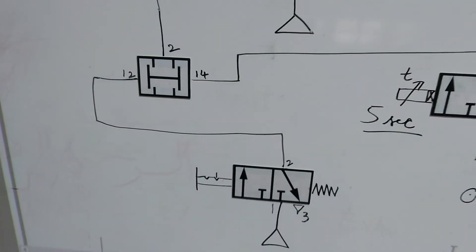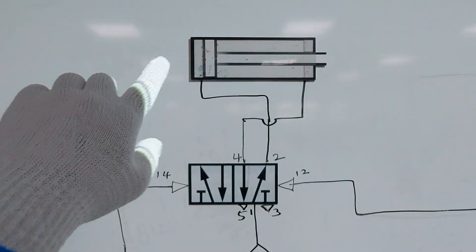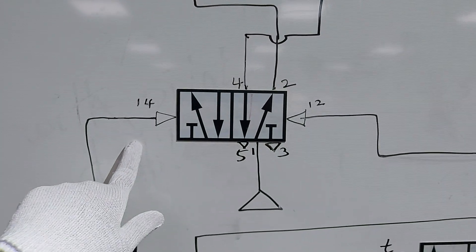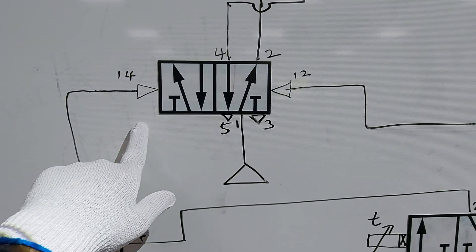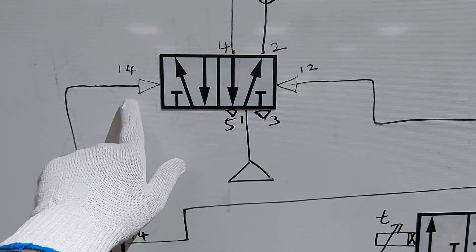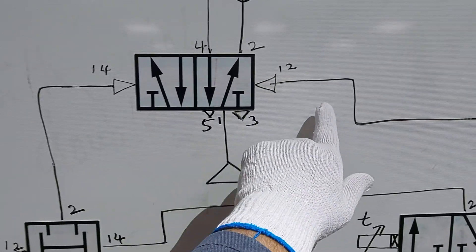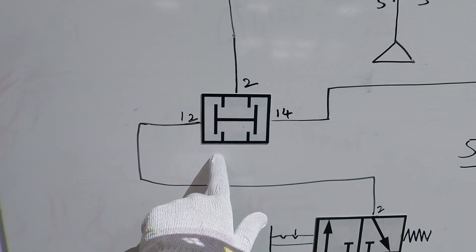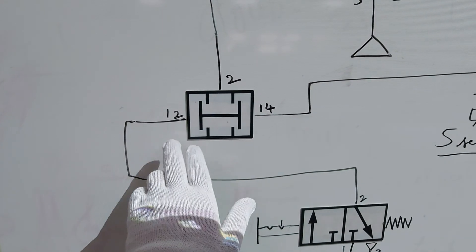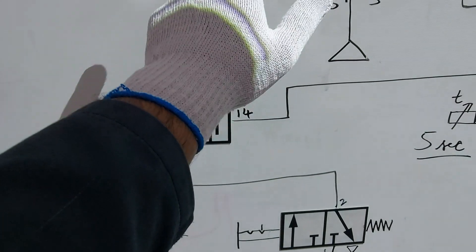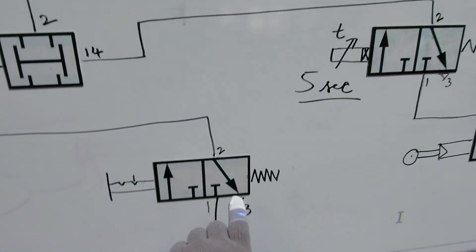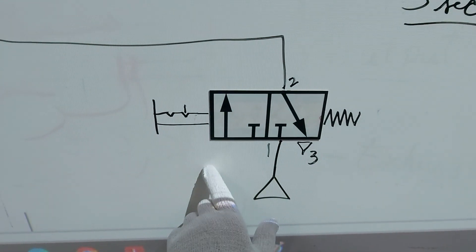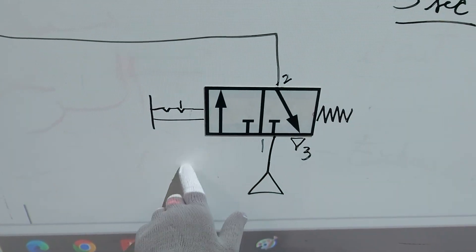Here is the circuit diagram. It shows the double acting cylinder, the 5x2 wave valve with double pilot — actuated by pneumatic air — and the dual pressure valve, which requires pressure on both sides to work. There is also a selector switch, shown here as a 3x2 wave selector switch, with its corresponding symbol.